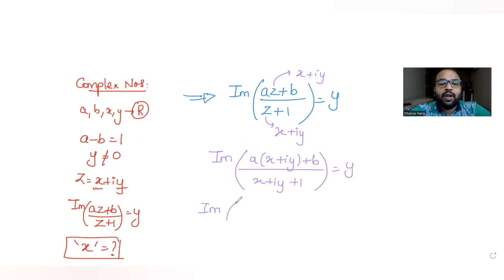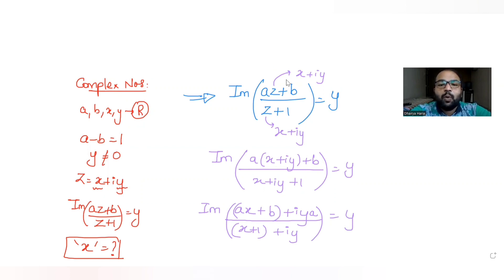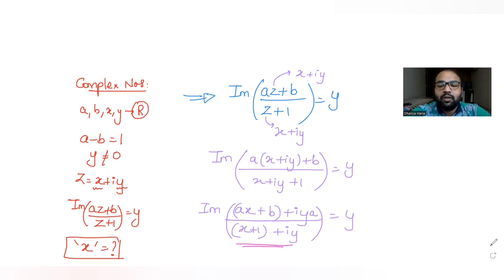Expanding the numerator gives (ax + b) + iay, and the denominator is (x + 1) + iy. In the next step, I can rationalize the denominator to solve this entire expression further.